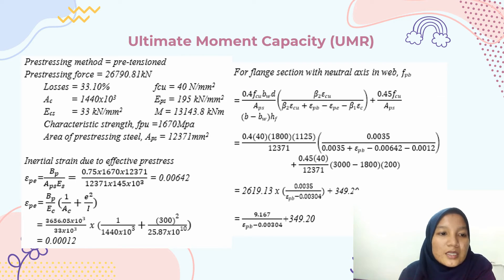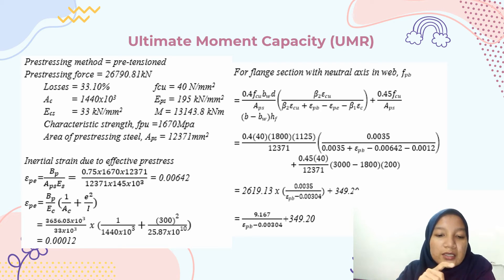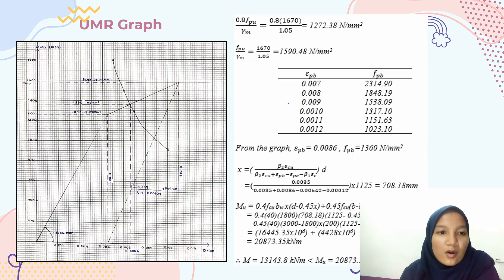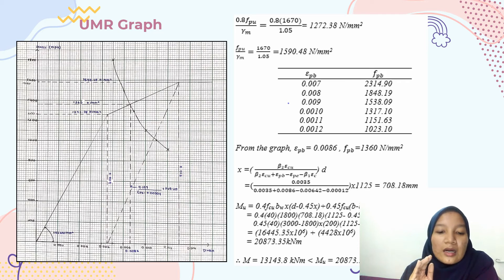For the ultimate moment capacity, as you can see in the slide, the initial strain due to effective pre-stress is 0.0012. The ultimate moment resistance is determined using a trial-and-error method with the stress-strain curve graph. From the graph, the strain obtained is 0.0086 and FPB is 1360 N/mm². The moment ultimate MU is less than the required moment, and the design is okay.